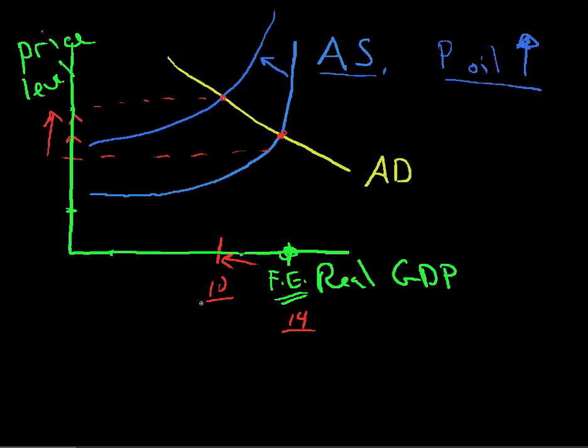We've got what's called a stagflation effect. This is called cost-push inflation. The cost has gone up. Inflation's gone up. And output's gone down.